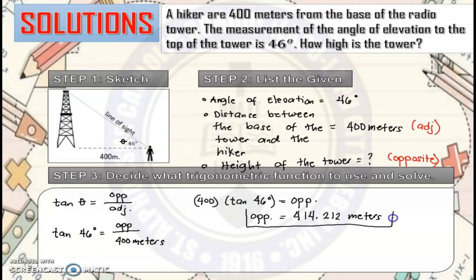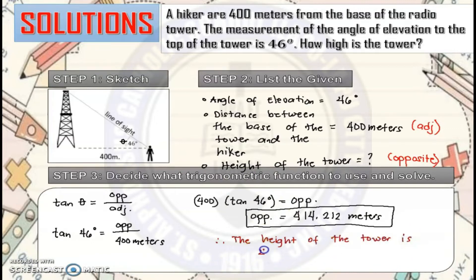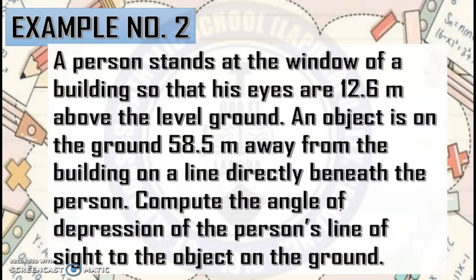That is the measure for the height of the tower. Therefore, the height of the tower is 414.212 meters. Now let's have the next example. A person stands at the window of a building so that his eyes are 12.6 meters above the level ground. An object is on the ground 58.5 meters away from the building on a line directly beneath the person. Compute the angle of depression of the person's line of sight to the object on the ground.